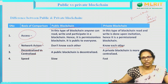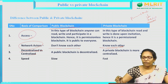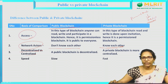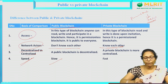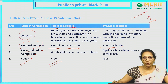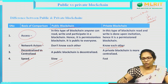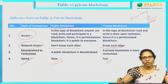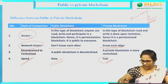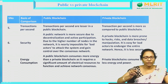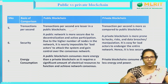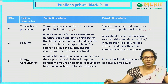Public blockchain is decentralized — there is no central authority — whereas private blockchain is completely centralized. Regarding speed: in public blockchain, the size is very large and anyone can participate, so it is slow. But in private blockchain, it is centralized and the number of nodes is limited, so it is very fast. Regarding transactions per second: public blockchain has fewer transactions per second because it is slow, whereas private blockchain handles more.